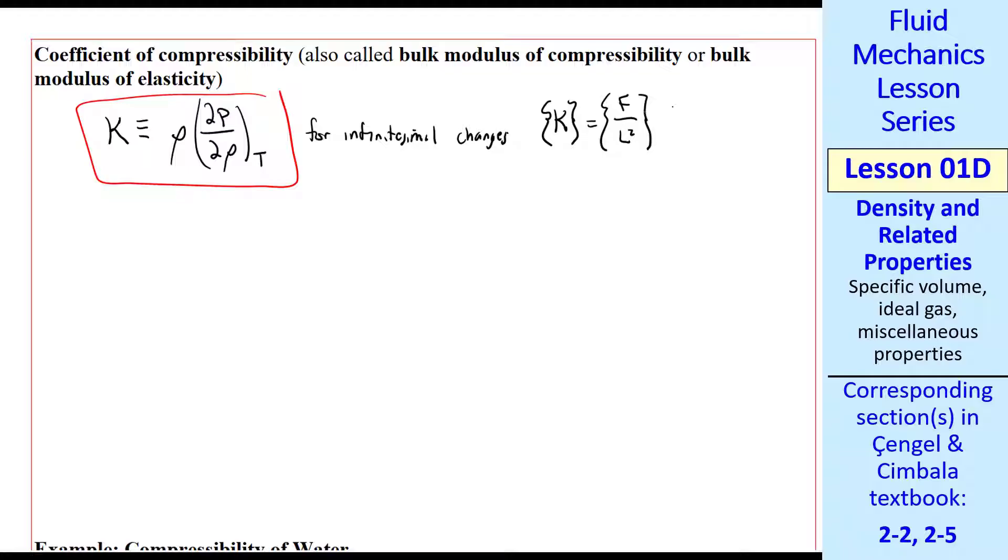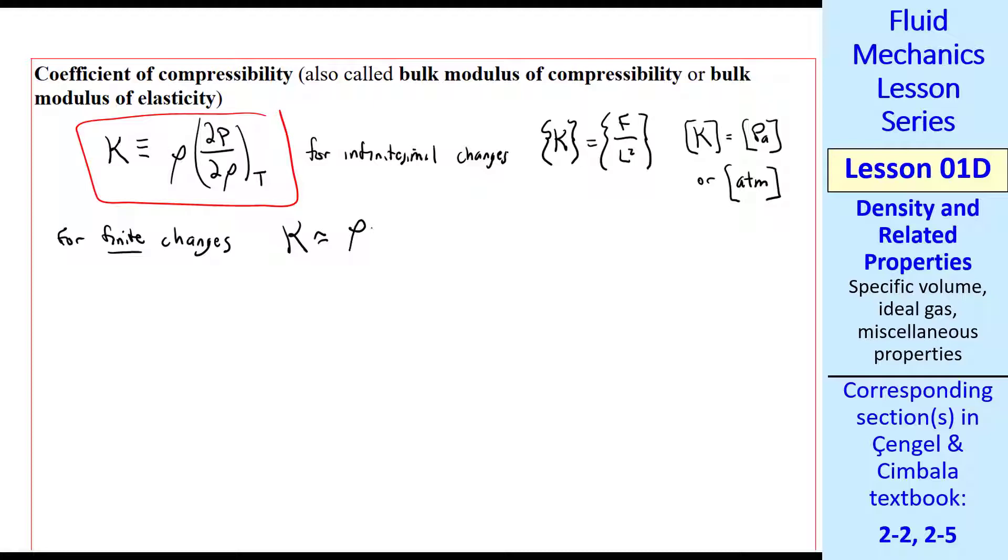Let's make an approximation for finite changes. Kappa is approximately then rho delta p over delta rho at constant temperature. There's another property called isothermal compressibility. Alpha is just 1 over kappa.